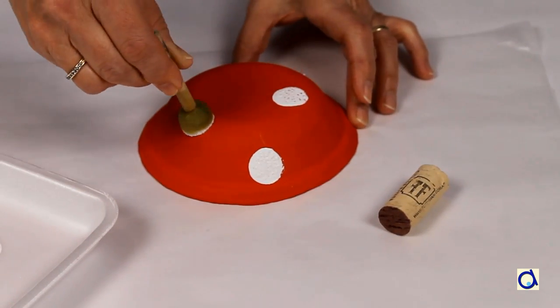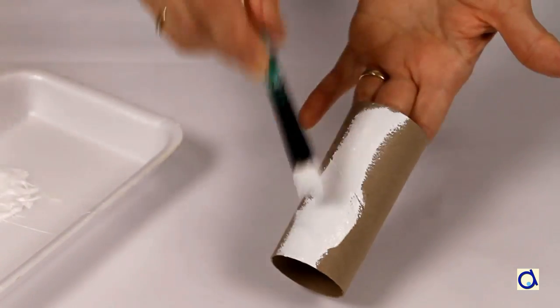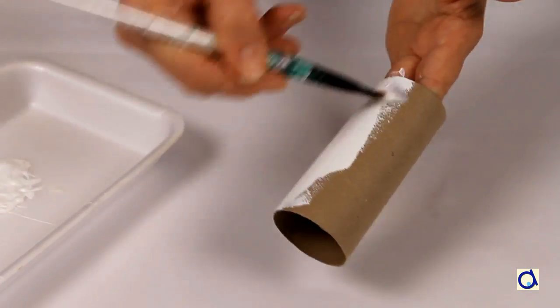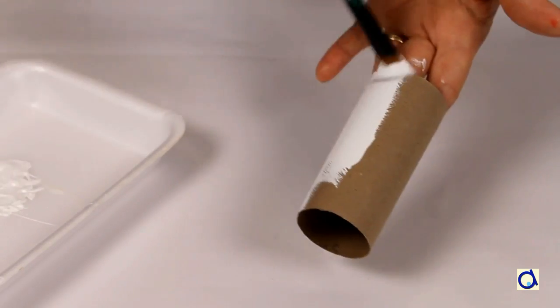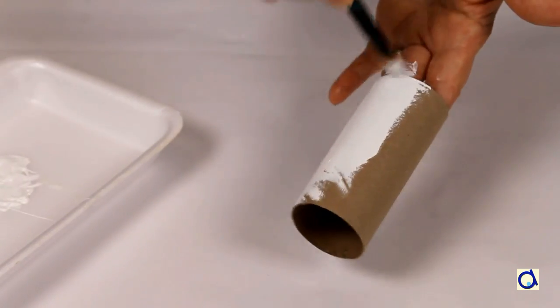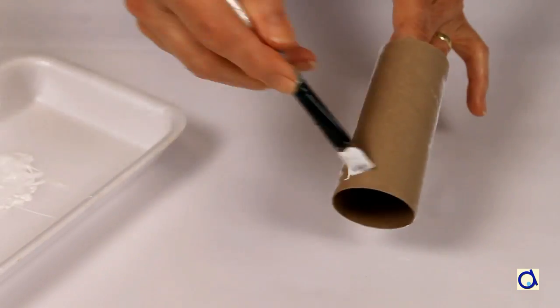To represent the stem of the mushroom, take a toilet paper roll and paint it in the colour of your choice. The stem of the fly agaric is white and therefore I am painting it in that colour.